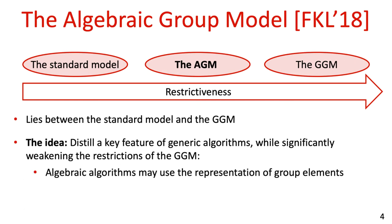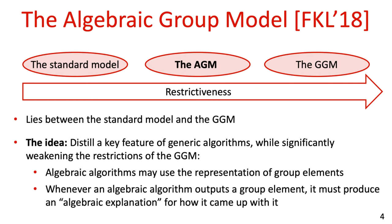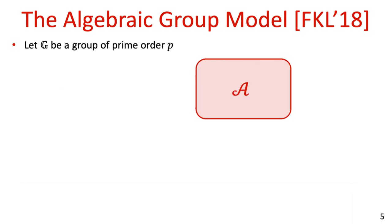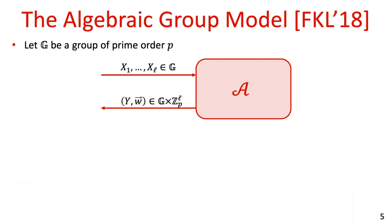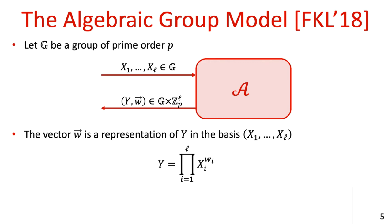Unlike in the Generic Group Model, algebraic algorithms do receive the representation of group elements and may use it as they wish. The restriction is that whenever an algebraic algorithm outputs a group element, it must produce alongside it an algebraic explanation for how this group element was computed. Concretely, let G be a group of prime order P and consider an algebraic algorithm A. A receives l group elements x1 through xl as input and outputs a group element y, along with a vector w of l integers in Zp. This vector w serves as an algebraic explanation: w is the representation of y in the basis of x1 through xl, meaning y equals the product of each xi raised to the power of wi.